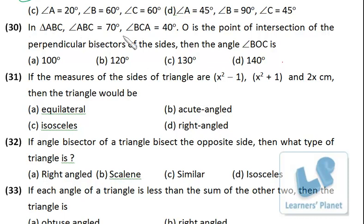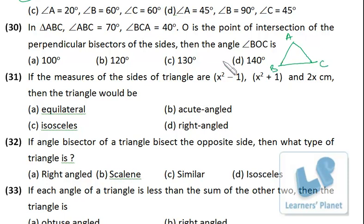In triangle ABC, angle ABC is 70 degrees, angle BCA is 40 degrees, and O is the point of intersection of perpendicular bisectors of the sides. Then angle BOC is? So what I do is I just draw triangle ABC. Angle B is 70, angle C is 40, so angle A must be 70, since 70 plus 40 plus 70 equals 180.